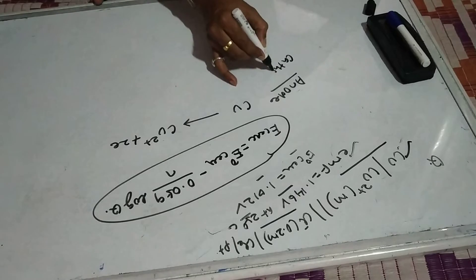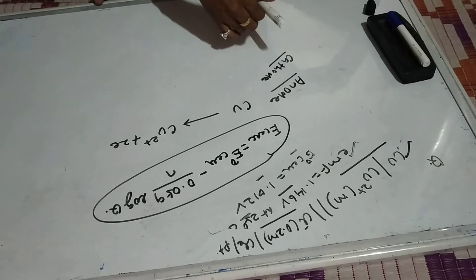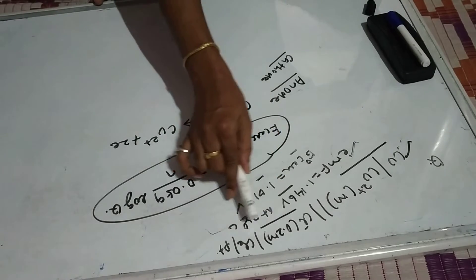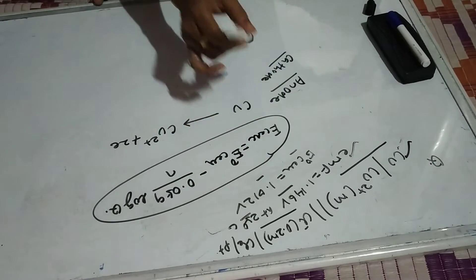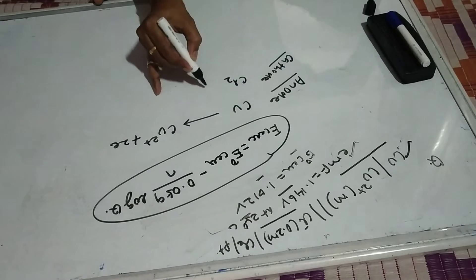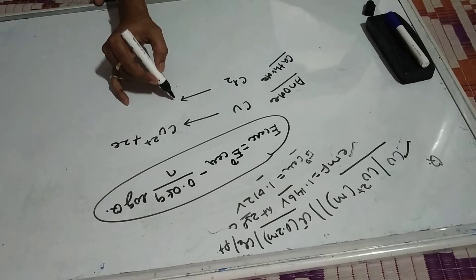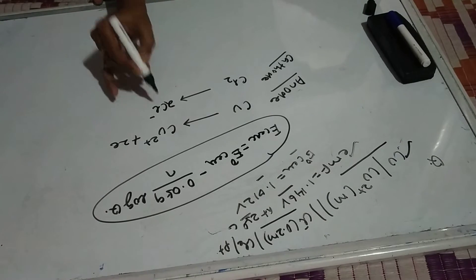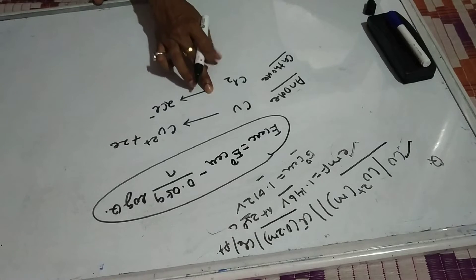Similarly at the cathode the reduction will take place. The reduction here is Cl₂ to Cl⁻, because here the oxidation number is minus 1, and here it is 0. So if I do the reduction, the oxidation number should decrease — that is Cl₂ is converted to Cl⁻, meaning oxidation number decreases from 0 to minus 1. So I will add 2 electrons on the right-hand side to balance it.